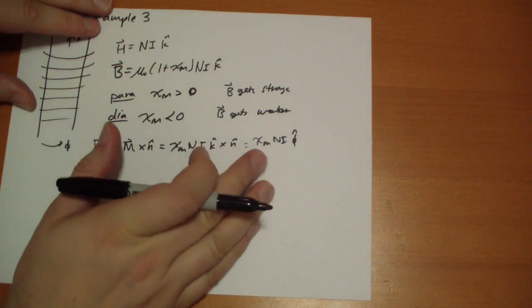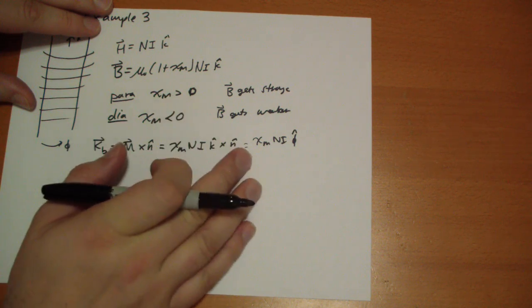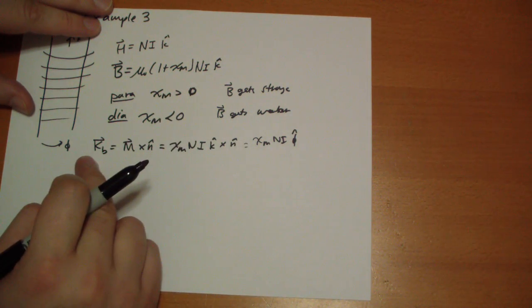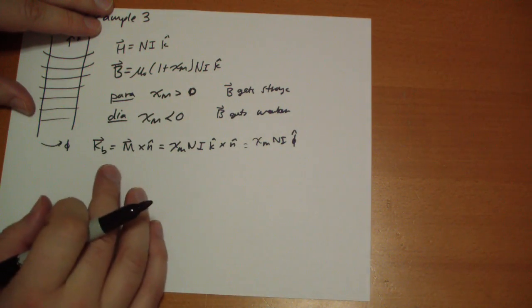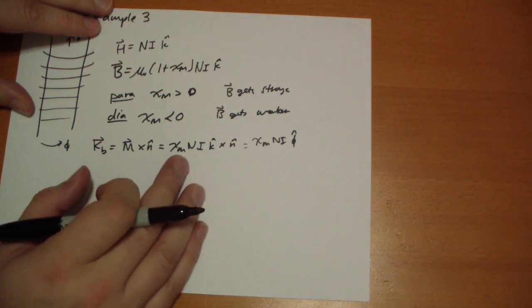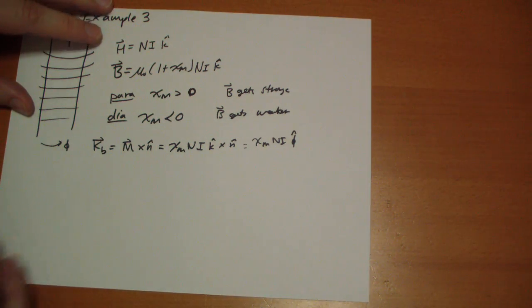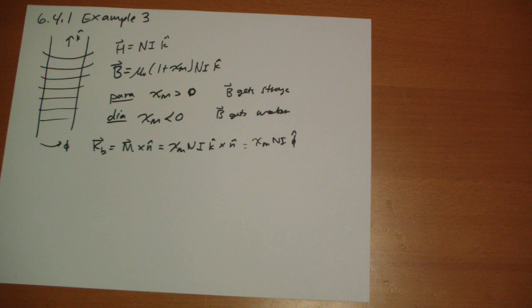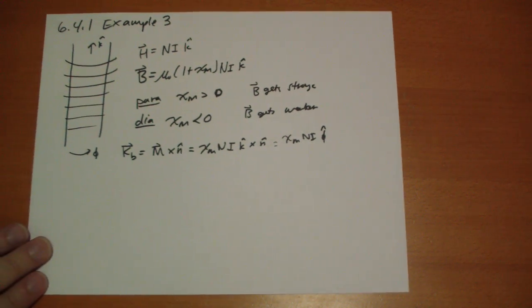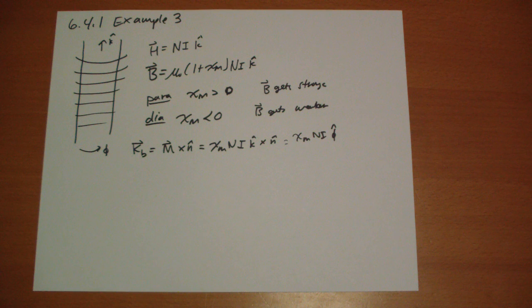And so you can see that if chi m is bigger than zero, then this bound current goes along with the current, the free current that was put in there. If it's less than zero, then the bound current will go opposite to the free current that we had. So that kind of gives you a good rule of thumb for what's happening with the bound current and how it responds to the free current that you subjected to.